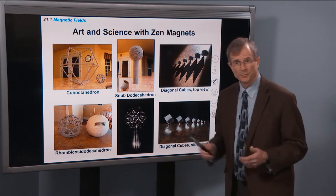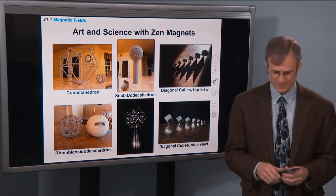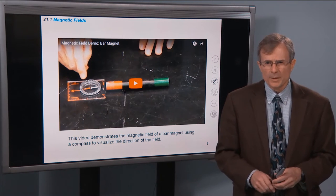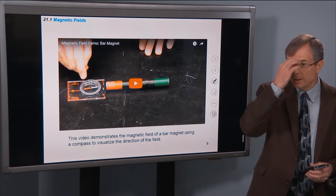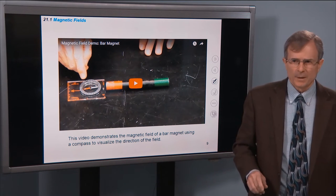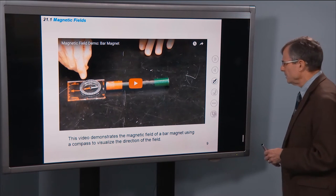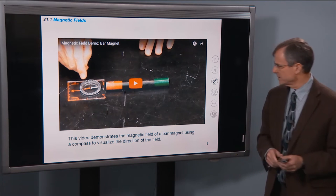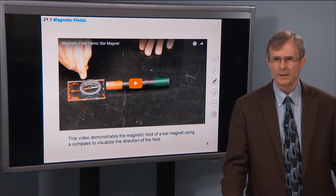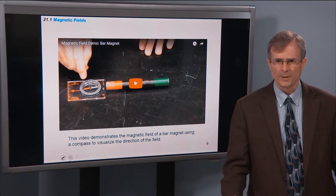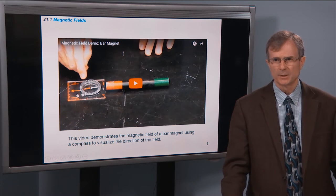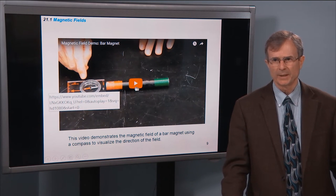These are some of the things we've built in our own family unit. This is a video demonstration of the magnetic field of a bar magnet using a compass to visualize the direction of the field, which will introduce the next concept: the direction of the magnetic field.